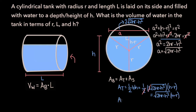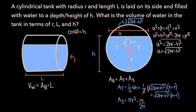Now let's find the area of this sector. The sector is a portion of the circle, so we take the area of the circle — pi r squared — and multiply by the fraction that its angle alpha is of 2pi radians. So the area of the sector is pi r squared times alpha over 2pi. To find alpha, we need angle theta, where cosine of theta equals adjacent over hypotenuse, which is (h minus r) over r. Therefore, theta equals the arc cosine of (h minus r) over r.